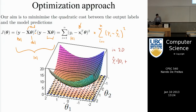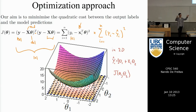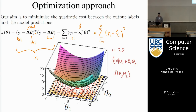In 2D with two θ parameters, the model is y_i = θ_1 + x_i·θ_2. The cost function J(θ) depends on θ_1 and θ_2 and is quadratic in θ — positive and quadratic, so in 2D it's a parabola. The nice thing about the parabola is that it has only one minimum, so the solution is easy to find — it's the bottom of the parabola.